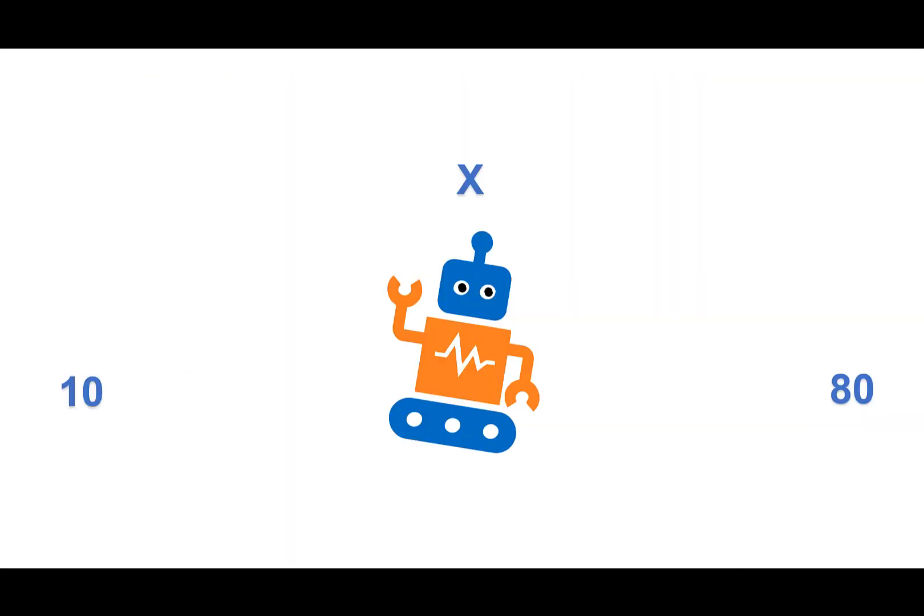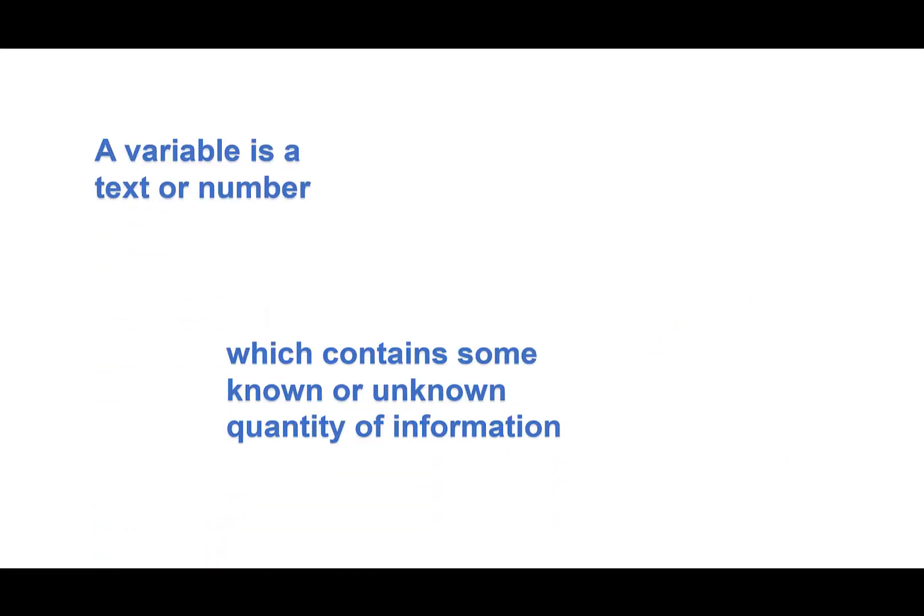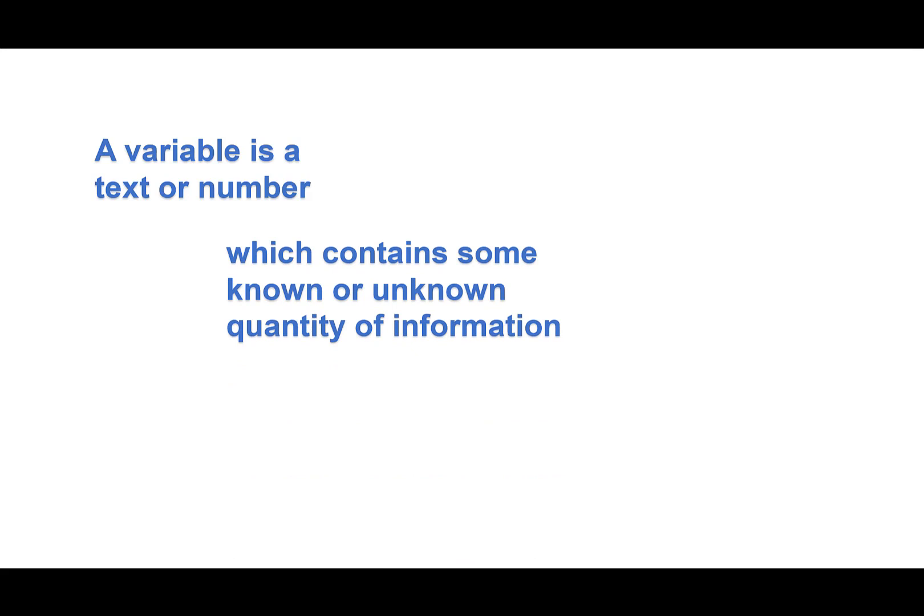Let's think of our robot as a variable. He can change from one number to a different number as we move closer to the square root of 676. So each guess is a change that we call a variable. Yes. A variable is a text or number which contains some known or unknown quantity of information referred to as a value. A variable can change, so it's variable.